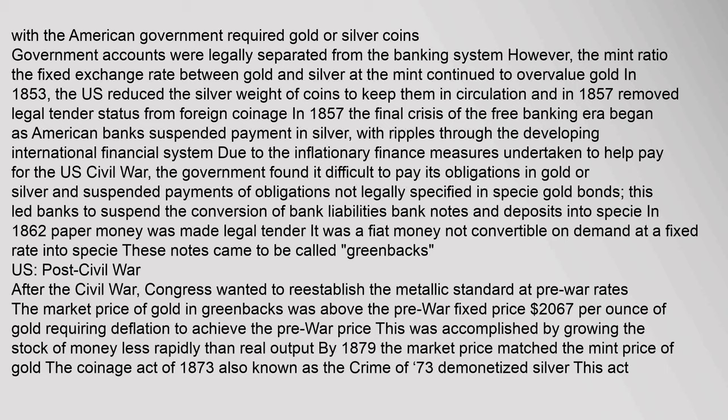In 1857, the final crisis of the free banking era began as American banks suspended payment in silver, with ripples through the developing international financial system. Due to inflationary finance measures to help pay for the U.S. Civil War, the government found it difficult to pay obligations in gold or silver and suspended payments. This led banks to suspend the conversion of bank liabilities — bank notes and deposits — into specie. In 1862, paper money was made legal tender; it was fiat money not convertible on demand at a fixed rate into specie. These notes came to be called greenbacks.